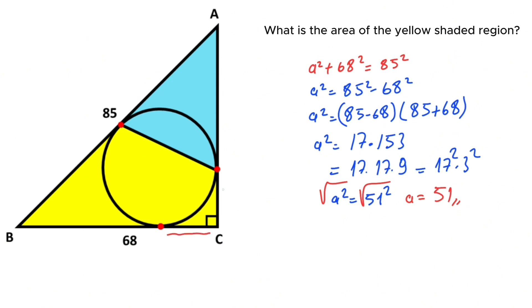But before that, these two parts are equal according to the two tangent theorem. So let's call these x. That means 51 minus x, that means 51 minus x left here. And this length is also 51 minus x because of the two tangent theorem.